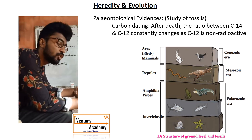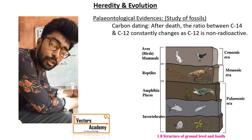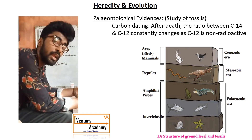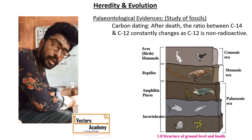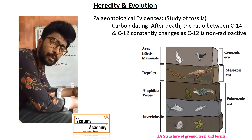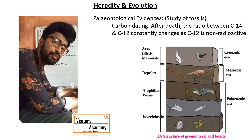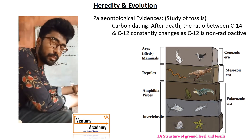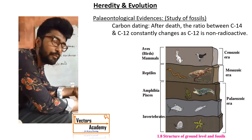Paleontological evidences also show that certain vertebrates originated from invertebrates: aves and mammals originated from reptiles, reptiles from amphibians, amphibians from Pisces, and Pisces from invertebrates. That is all about paleontological evidences.